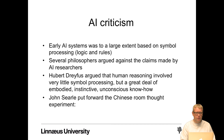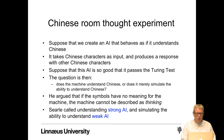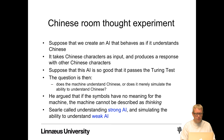John Searle put forward the Chinese Room thought experiment: suppose we create an AI that behaves as if it understands Chinese — it takes Chinese characters as input and produces Chinese character responses — and it's so good that it passes the Turing test in Chinese. The question is: does the machine understand Chinese, or does it merely simulate the ability to understand Chinese? Searle argued that if the symbols have no meaning for the machine, the machine cannot be described as thinking, even if it successfully communicates.